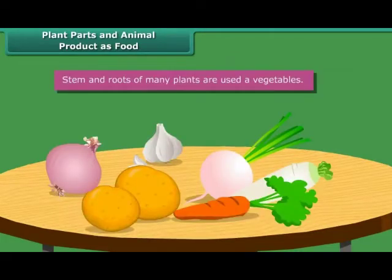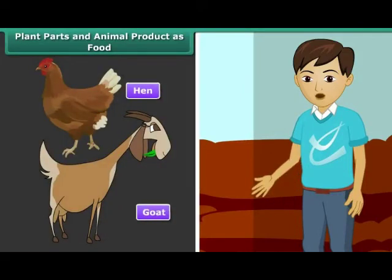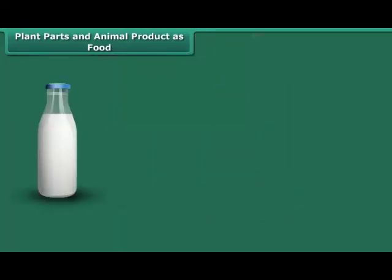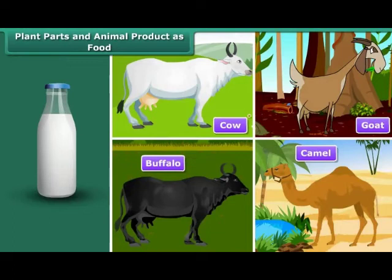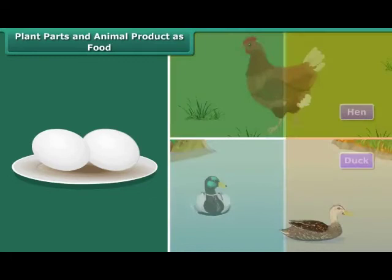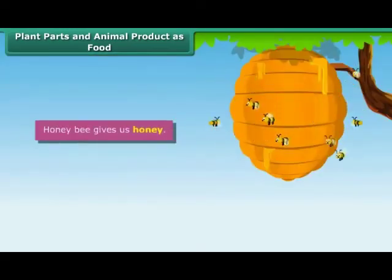Stem and roots of many plants are also used as vegetables. Animals also provide us some important products which we eat and drink daily, i.e. milk, curd, eggs. We get milk from cow, buffalo and goat, and even from camel in desert areas. We get eggs from hens and duck. We also get meat from chicken, goat, camel, etc. Fish and prawn are also eaten. Honeybee gives us honey.